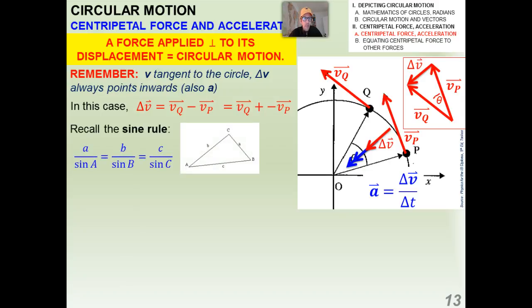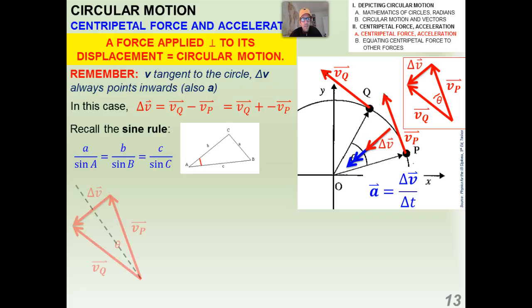Before doing so, I want to remind you of something called the sine rule. For any triangle, the ratio of a side over the sine of its opposite angle is always the same for all three sides. So little a over sine of big A equals little b over sine of big B equals little c over sine of big C. That's going to be important in our derivation.